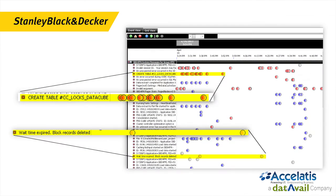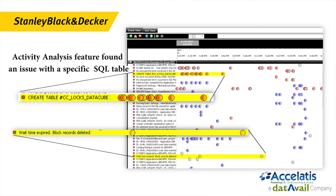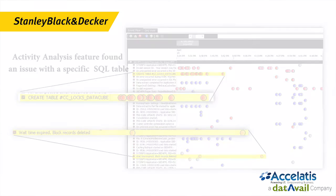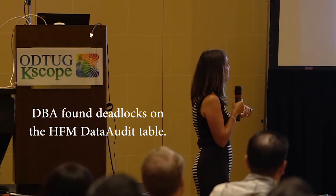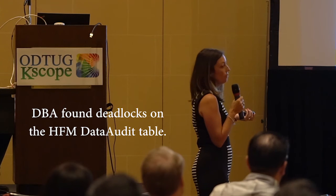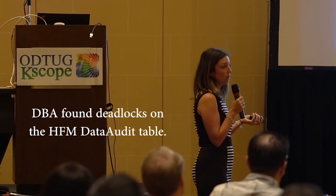The activity analysis feature showed that HFM was having issues with a specific SQL table related to HFM. From there we went to our DBA, and the DBA found deadlocks on the HFM data audit table. As an admin, when I couldn't get into the system messages or the audit logs, that was because there was a deadlock on the table, and I wasn't able to even get back into the application.